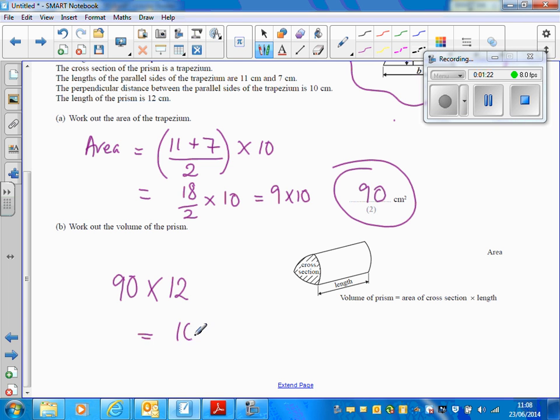And if we do 90 times 12, we get 1080 centimetres cubed, and that's the volume of the prism. Thank you.